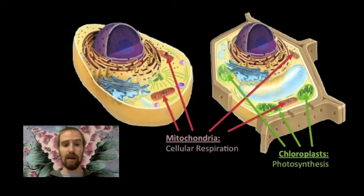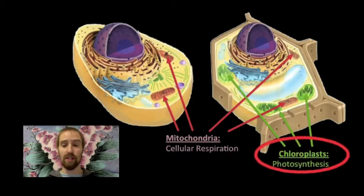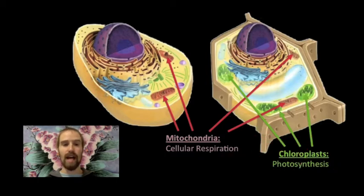Specifically, endosymbiotic theory is the story of these two organelles: the mitochondria, where cellular respiration takes place, and the chloroplast, where photosynthesis takes place. I really cannot overstate how important these two structures are in supporting life on our planet, because they are absolutely crucial for life as we know it.